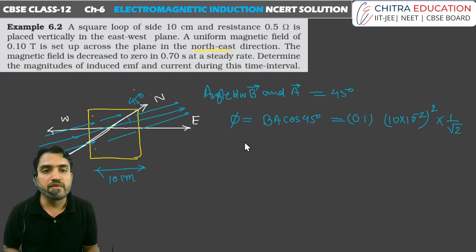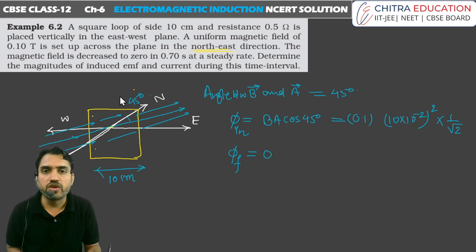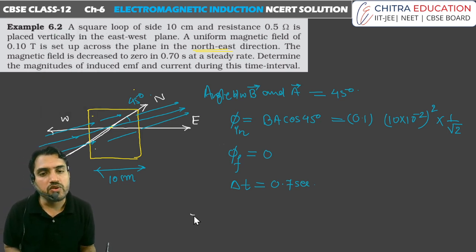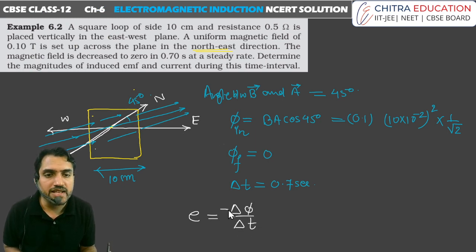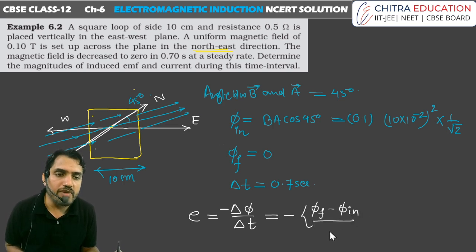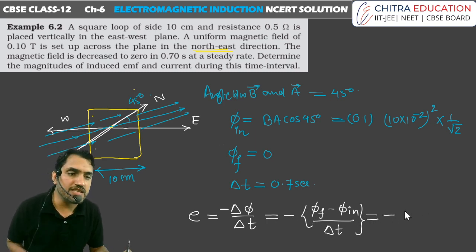This gives us the initial flux. The final flux will be 0, because the magnetic field has been decreased to zero. The time interval is 0.7 seconds, as given. Using Faraday's law, the average EMF = −ΔΦ/Δt, where ΔΦ = final flux − initial flux, divided by Δt. Using Lenz's law, the minus signs cancel out.